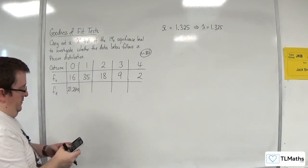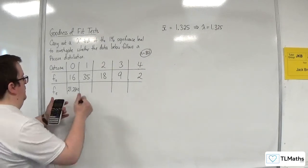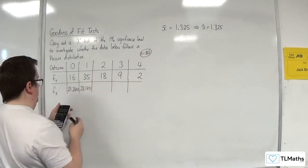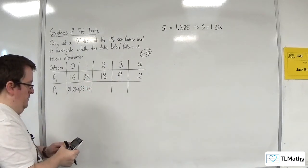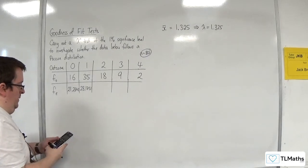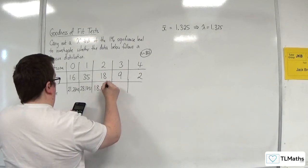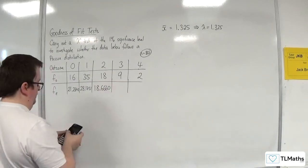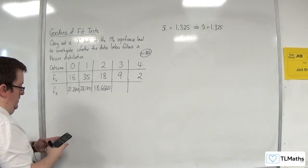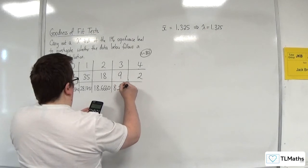Let's change this to 1. So 28.1751. Let's change it to 2. So 18.6660. Let's change it to 3. So 8.2442.